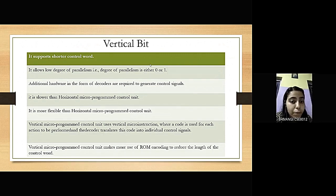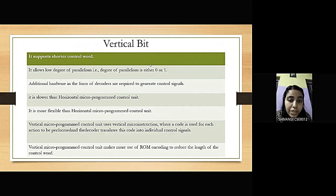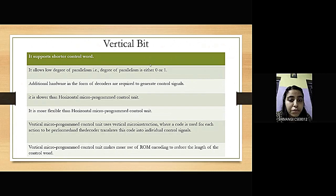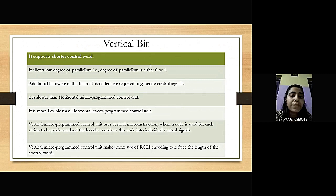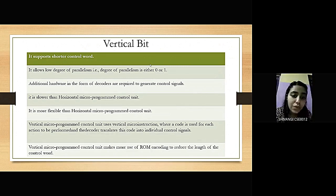Vertical microprogram control unit uses vertical micro instructions where a code is used for each action to be performed. The decoder translates the code into individual control signals, making more use of ROM. Additional hardware is also added in the form of decoders to generate control signals.